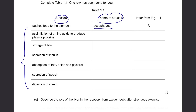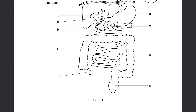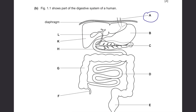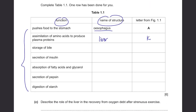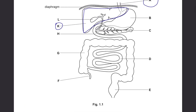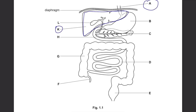The assimilation of amino acids is done by the liver. From the diagram, the liver is labeled K. Storage of bile — bile is stored by the gallbladder, which is letter L.